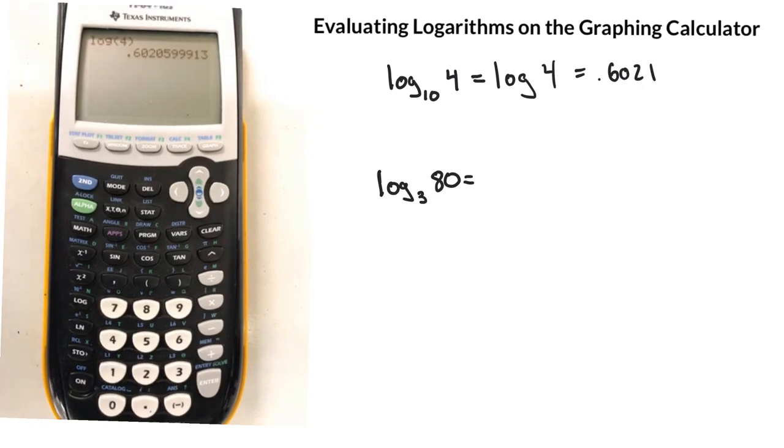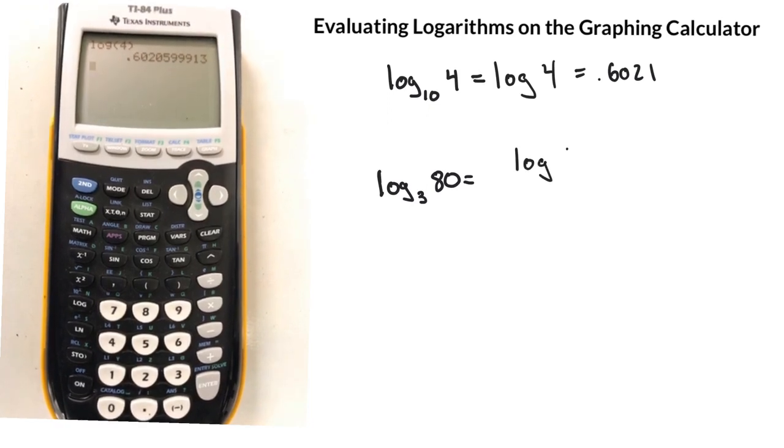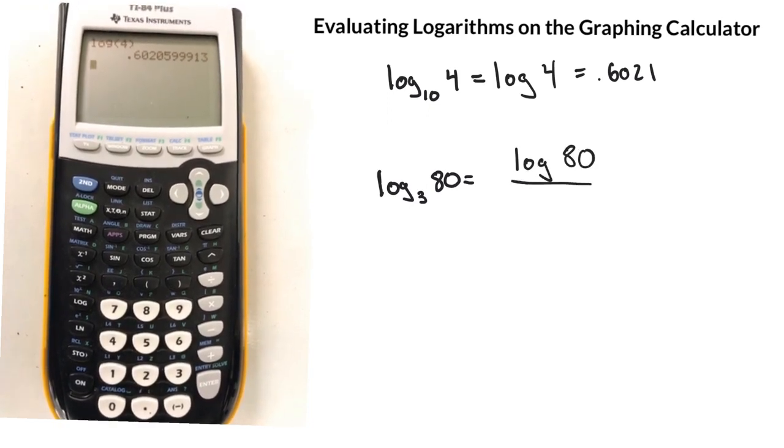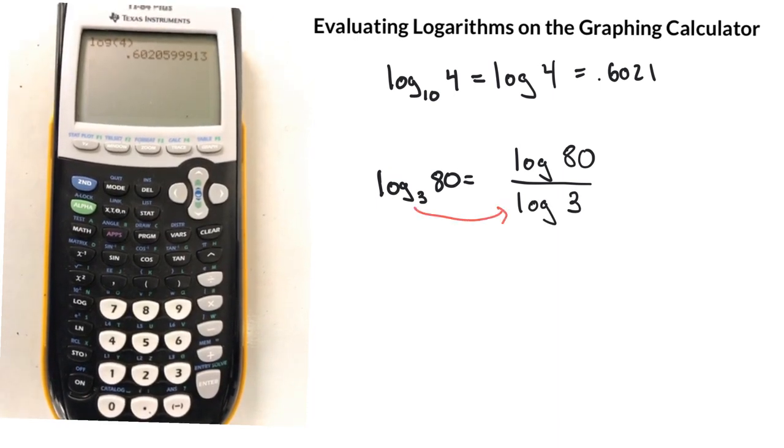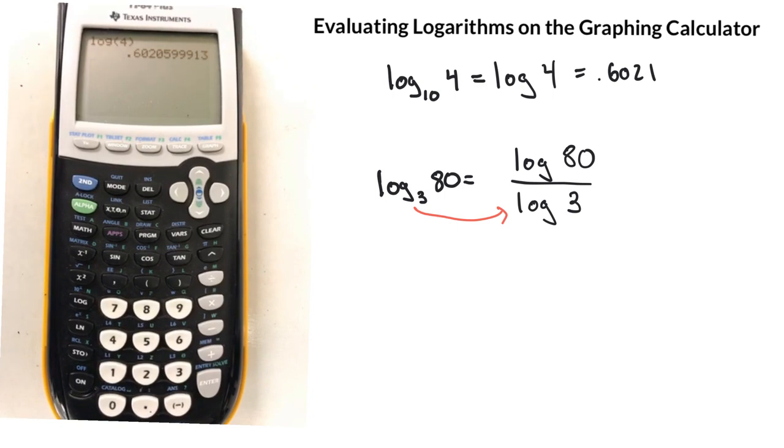So we're going to rewrite this, where what you have instead is the log of 80, now that's a base of 10, divided by the log of 3, which is also a base of 10. Remember, the base goes into the bottom, right? But the top stays in the top, or the input stays in the top.